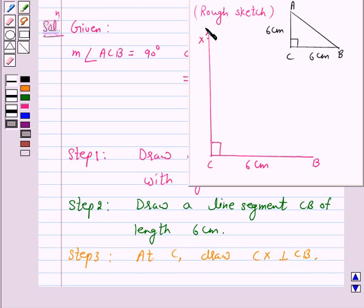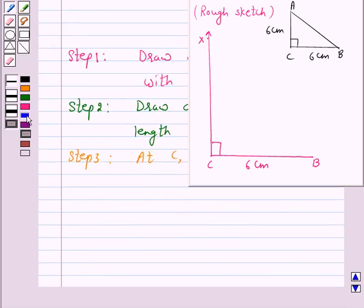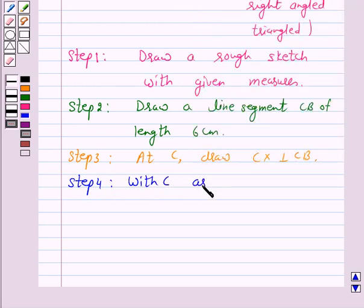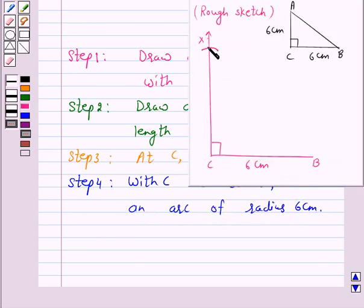Now, A should be somewhere on this perpendicular. Again according to our rough sketch, we see that from C, the point A is at a distance of 6 cm. So, our next step is draw an arc of radius 6 cm. Now take this point as A on this perpendicular CX.